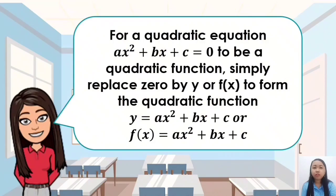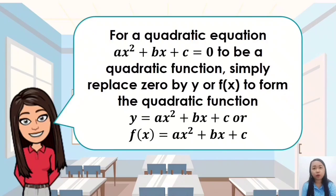For a quadratic equation, ax squared plus bx plus c is equal to 0, which is discussed in the previous module. To be a quadratic function, simply replace 0 by y or f of x to form the quadratic function: y is equal to ax squared plus bx plus c, or f of x is equal to ax squared plus bx plus c.